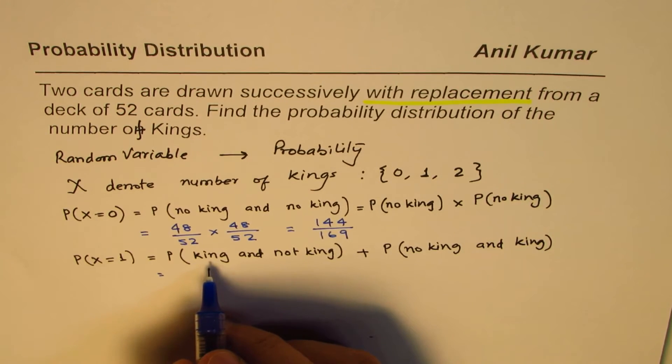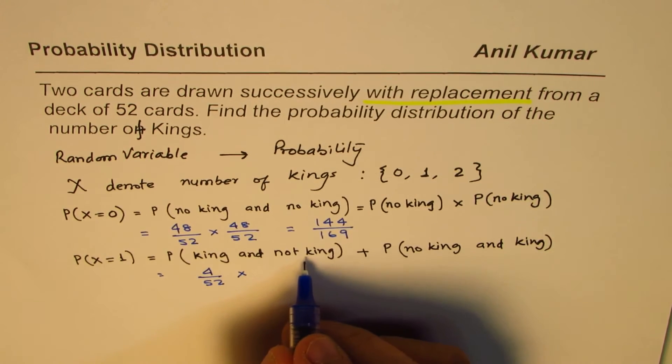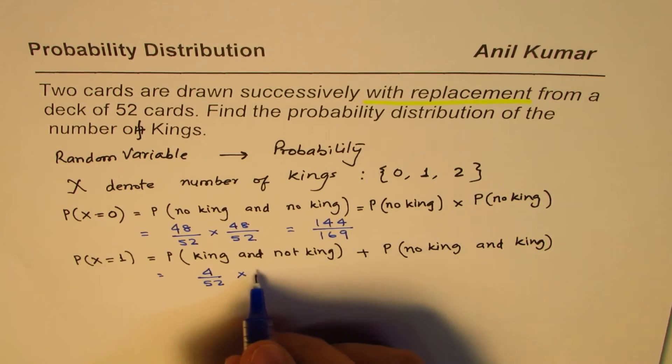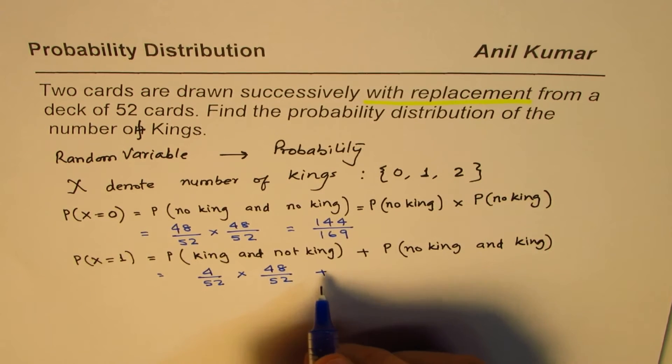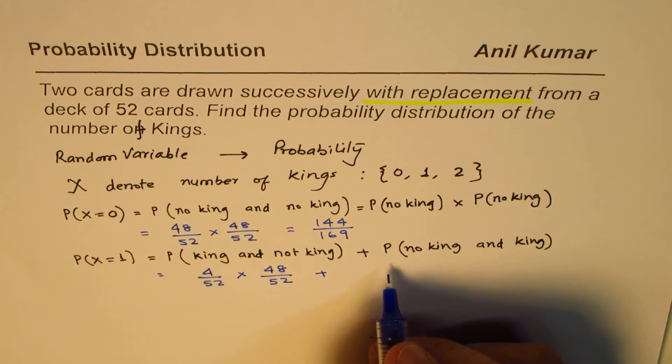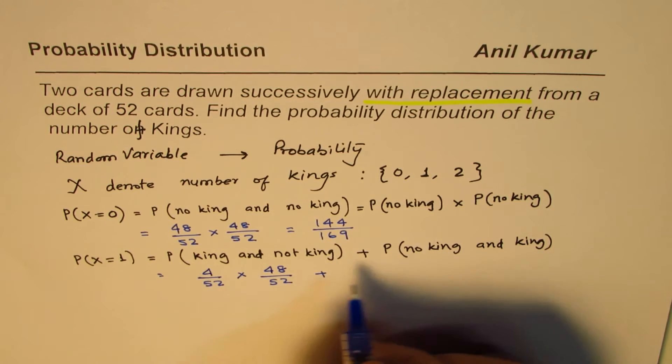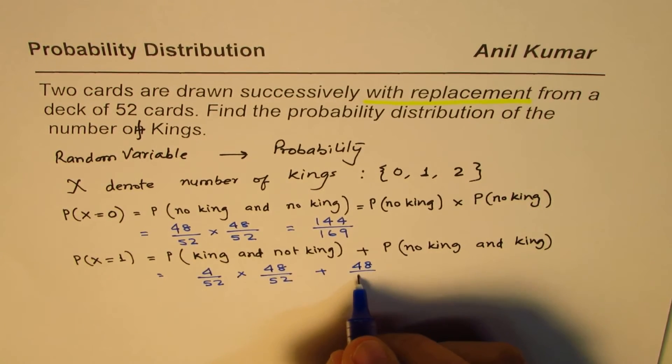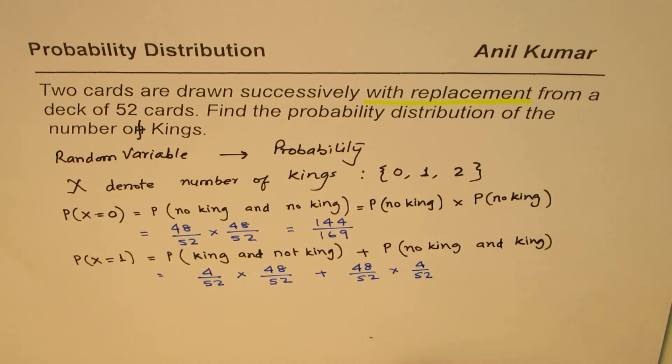When we are drawing a king, it is being taken from four kings available to us. That is to say, four over 52, and means multiply, not a king means any other card, so 48 cards remaining, over 52 plus. When we say that we are taking no king, the second case is just kind of reverse of this. No king means 48 over 52 times a king, 4 out of 52.